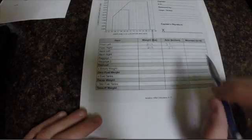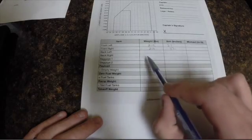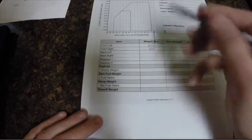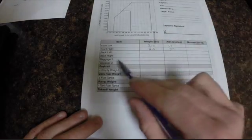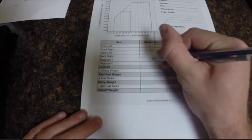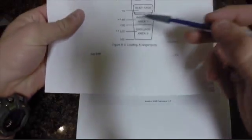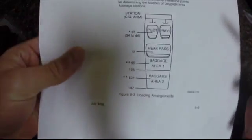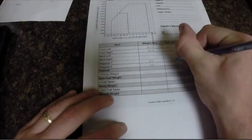Back left and back right we're not gonna have any other passengers so we'll just leave those blank. Baggage one and two we'll say we have bags and they'll be like 10 pounds each. And going back to this, baggage area one will be 95, right there, so put 95.